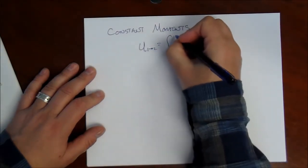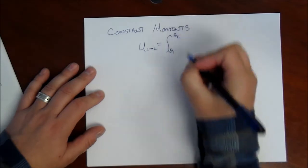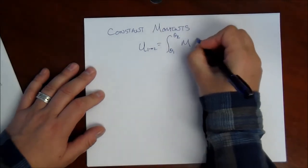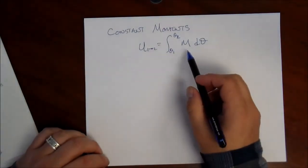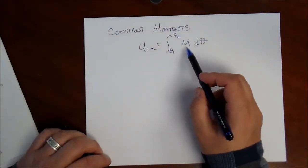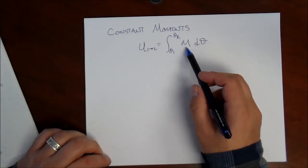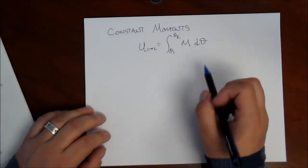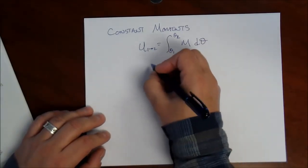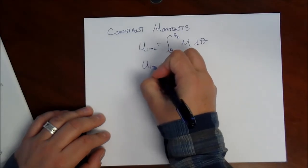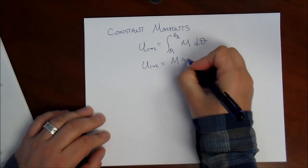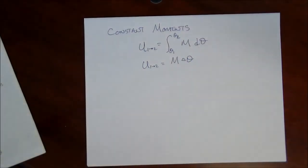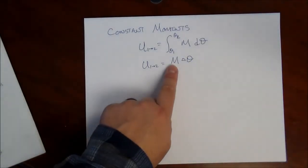And we're going to restrict ourselves to cases where either this integral is very simple to do, in other words, m is an explicit function of theta. Or the case where the moment doesn't change, in which case it's simply m times delta theta. That's for a constant, where the moment is of constant magnitude.